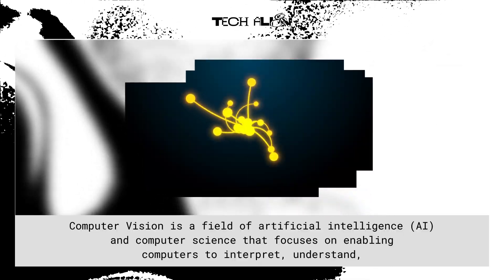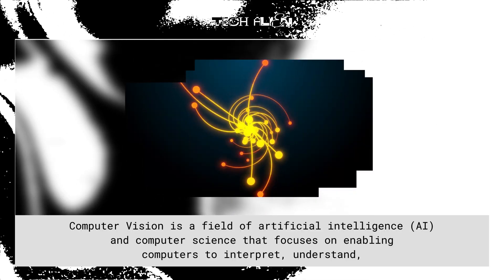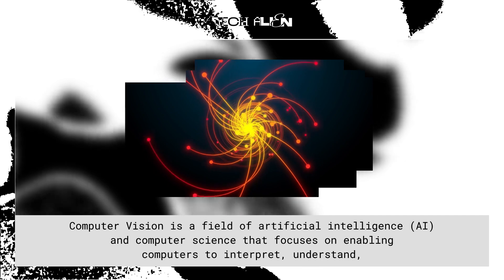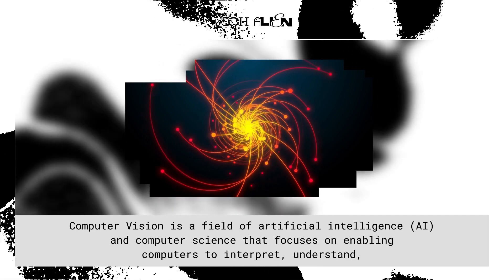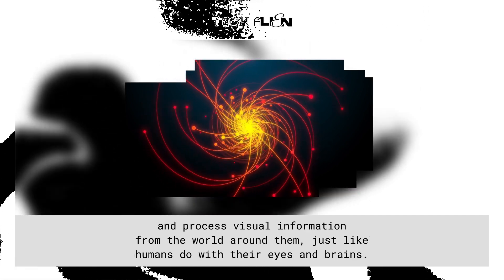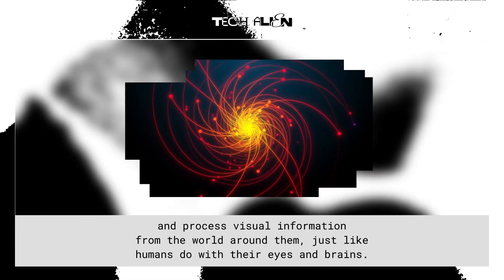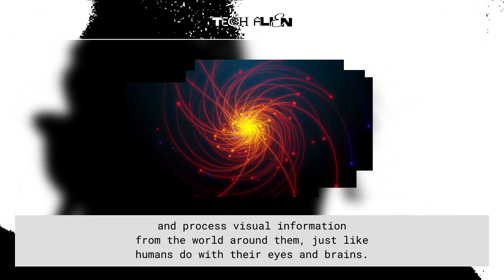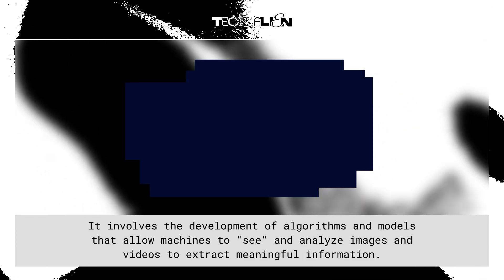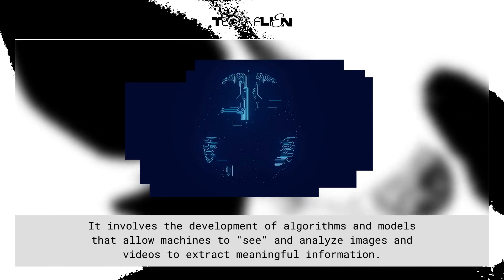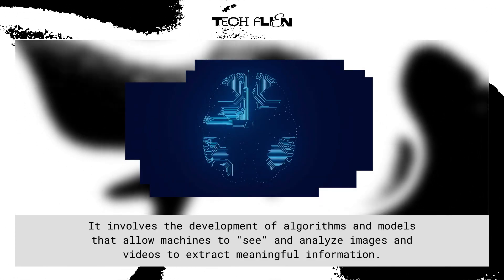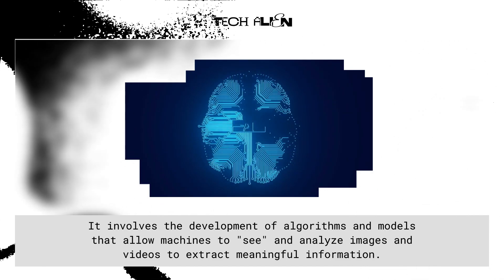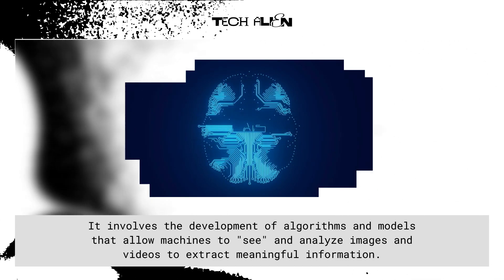Computer vision is a field of artificial intelligence and computer science that focuses on enabling computers to interpret, understand, and process visual information from the world around them, just like humans do with their eyes and brains. It involves the development of algorithms and models that allow machines to see and analyze images and videos to extract meaningful information.